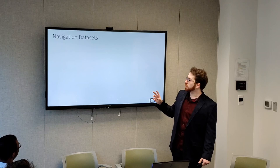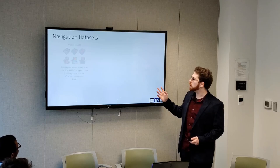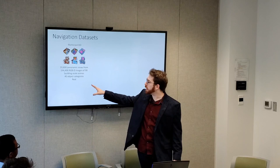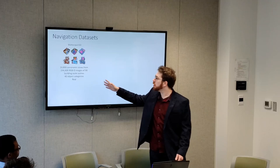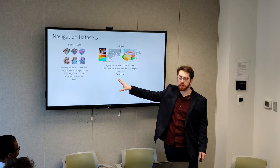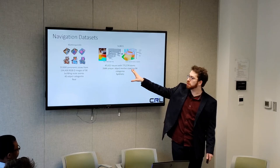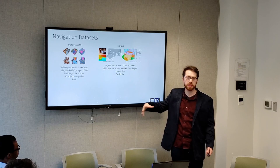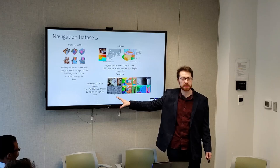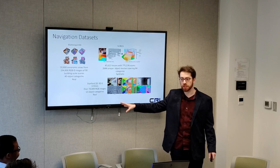Some datasets that researchers might consider include the Matterport 3D dataset — a series of 3D scanned homes with 40 object categories, consisting of over 190,000 RGBD images, usable in a variety of simulators. The SunCG dataset is a series of 45,000 synthetic homes with 84 different object categories and several hundred thousands of rooms, though being synthetic makes sim-to-real mapping difficult. There's also the Stanford 2D-3DS dataset, which is six different buildings scanned and semantically labeled using 13 object categories, very good for determining how robust your algorithm is for navigating through an environment.